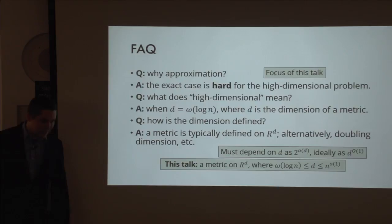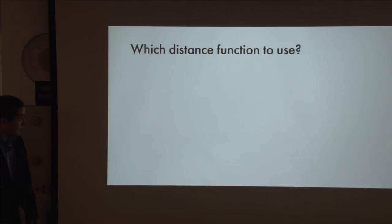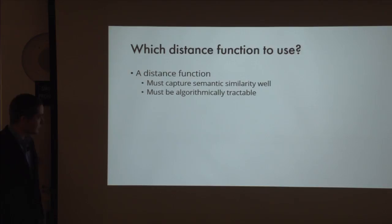The next obvious question is what distance function to use. There are two conflicting requirements: it should be sufficiently rich so that it captures semantic similarity of your objects well enough, but on the other hand it should be algorithmically tractable so that we can use it for large enough datasets. For example, for word embeddings it's cosine similarity, which is pretty much Euclidean distance on a sphere.